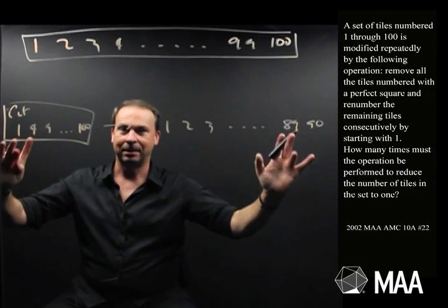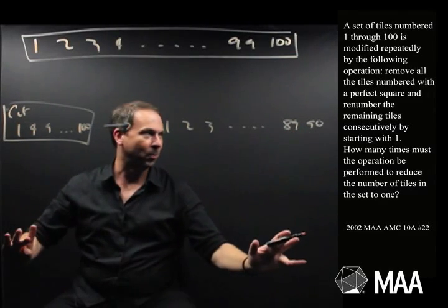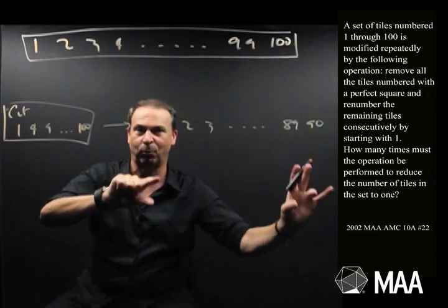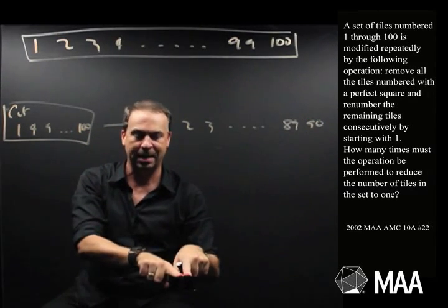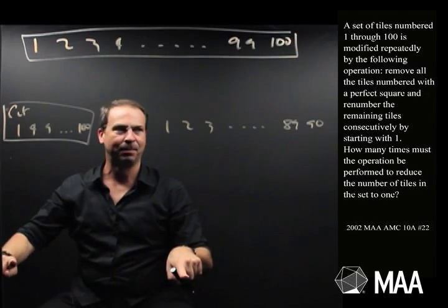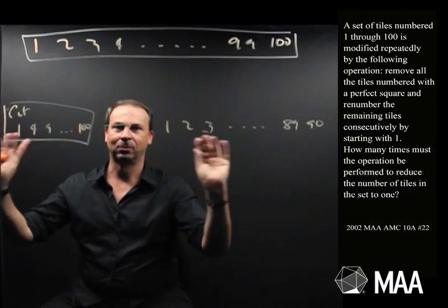Do this repeatedly. Keep going and see how many times you go all the way to get to just a set of one tile. Okay, so apparently I keep doing this operation and I'll end up with one tile in the end. And the question is, how many times? How many times I'll do this step? I've done it once. Well, let's do it a second time.